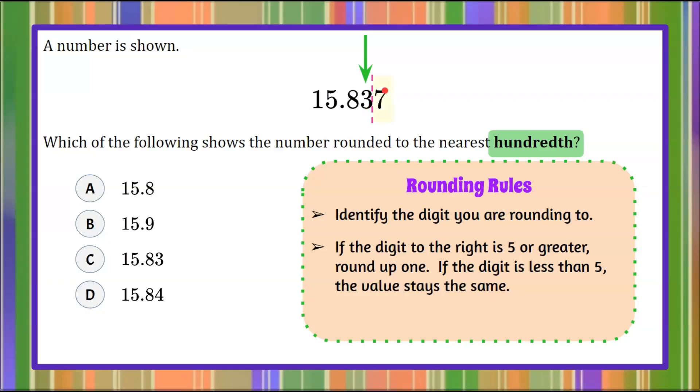Since the seven is five or greater, we are going to round up, which means three will become four. Then we drop all the remaining values to the right, so we'll drop the seven.